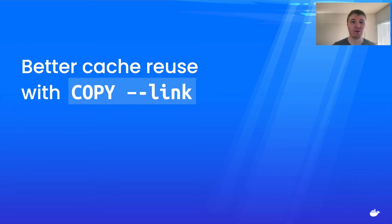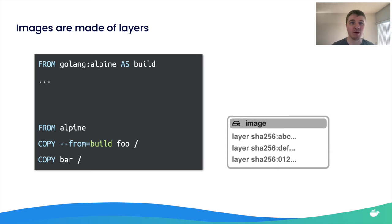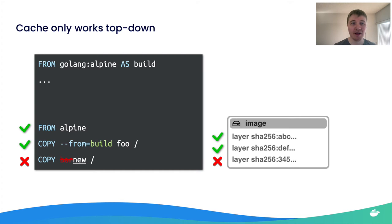Now let's look at another way to improve caching: the new COPY --link feature. Let's first understand how build cache works in Docker Build. Images are made of layers — tarballs extracted on top of each other — that make up your container filesystem. Every command in your Dockerfile creates a new layer. When you modify a command, you rebuild that layer. But cache only works top-down, so changing a base image invalidates the cache for all subsequent COPY commands, causing much slower builds.